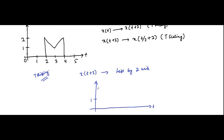The axis values are: -2, -1, 0, 1, 2, 3, 4, 5. When we shift the signal by two units to the left, the time shifted signal x(t+2) looks like this — slightly lower here, like this. This is the time shifted signal x(t+2).